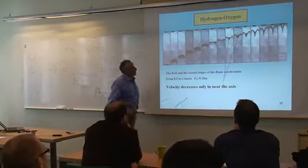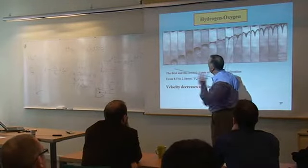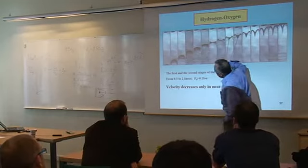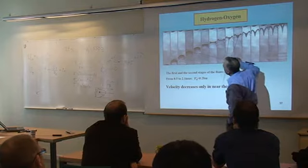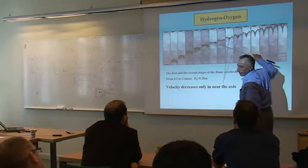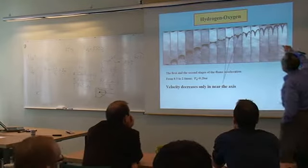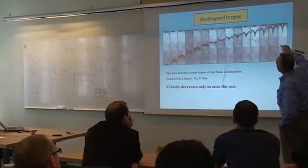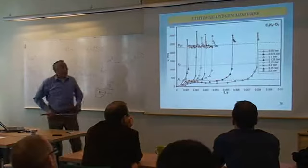Shadow photographs clearly show what I explained about the physics of flame acceleration. At the initial stage you can see formation of the fold between the wall and the flame — the fold becomes deeper and deeper, and then starts decreasing. This is the stage of apparent slowdown of the flame; if you measure velocity here it seems to be decreasing, but in fact it continues increasing.